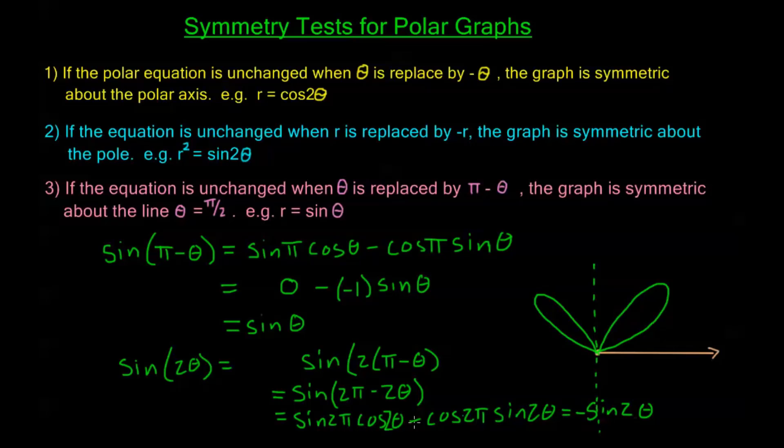And we see negative sine 2 theta and sine 2 theta are not always equal to each other. Okay, so this doesn't always work for sine, like the first one always works for cosine. It only works in some special cases, so we need to be a little bit careful.